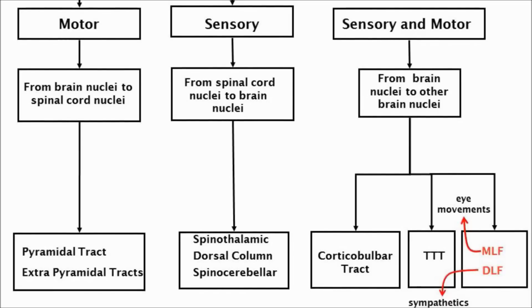Each motor track consists of an upper motor neuron and a lower motor neuron. The cell body of the upper motor neuron is in the cerebral cortex and its axons synapse onto the cell body of the lower motor neuron, which has its cell body in the spinal cord. The axons belonging to the lower motor neuron leave the spinal cord to enter the periphery and innervate muscles.